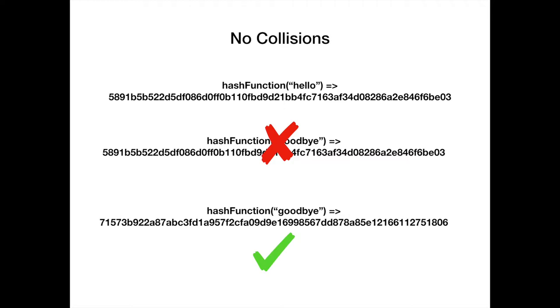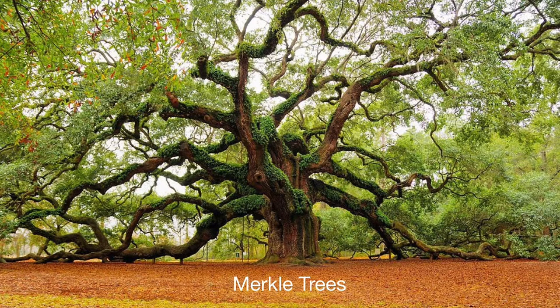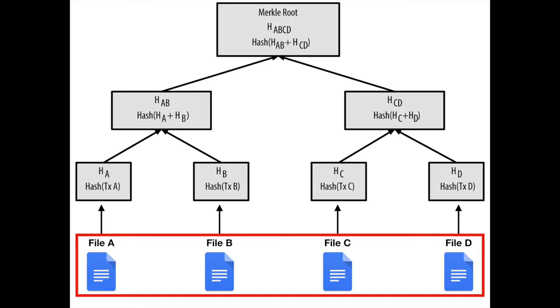Next we're going to look at Merkle trees. A Merkle tree is a type of data structure used for efficiently summarizing and verifying the integrity of large sets of data. In our situation, we want to verify the authenticity of documents without actually storing those documents on the blockchain. We can use a Merkle tree to do this. Let's assume we have four different documents and at some point down the road we'll need to verify they haven't been altered. We can create a Merkle tree out of the documents, take the Merkle root, and include it in a Decred transaction.